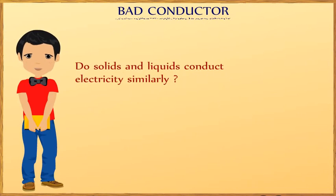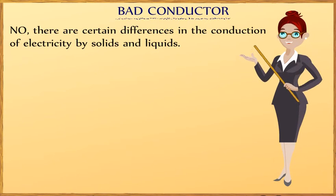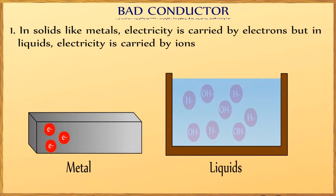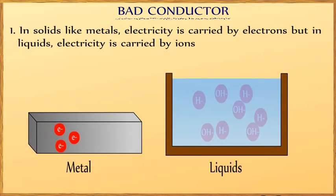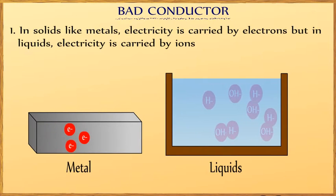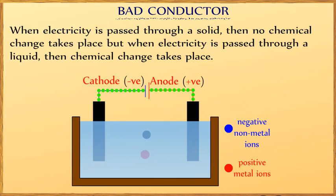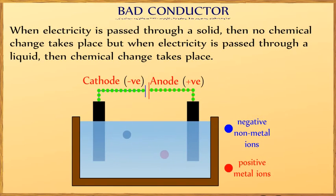Do solids and liquids conduct electricity similarly? No, there are certain differences in the conduction of electricity by solids and liquids. First, in solids like metals, electricity is carried by electrons, but in liquids, electricity is carried by ions. Second, when electricity is passed through a solid, no chemical change takes place. But when electricity is passed through a liquid, chemical changes take place.